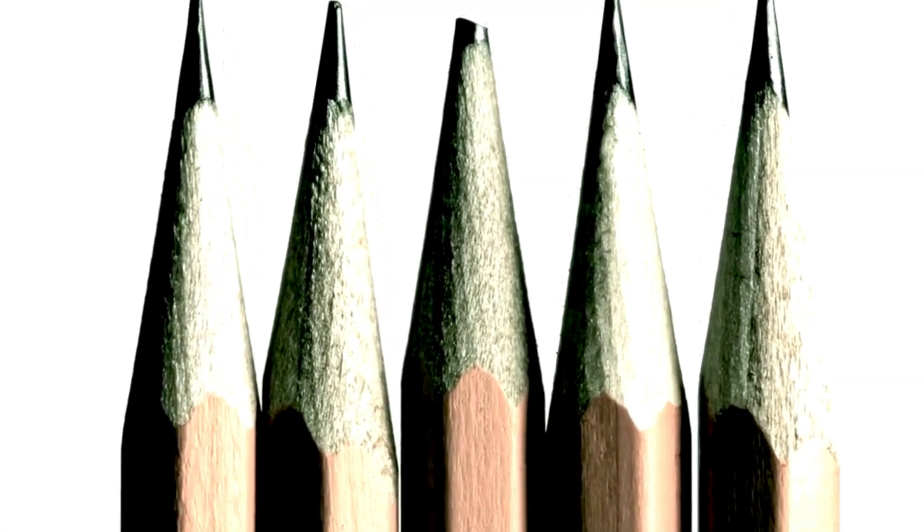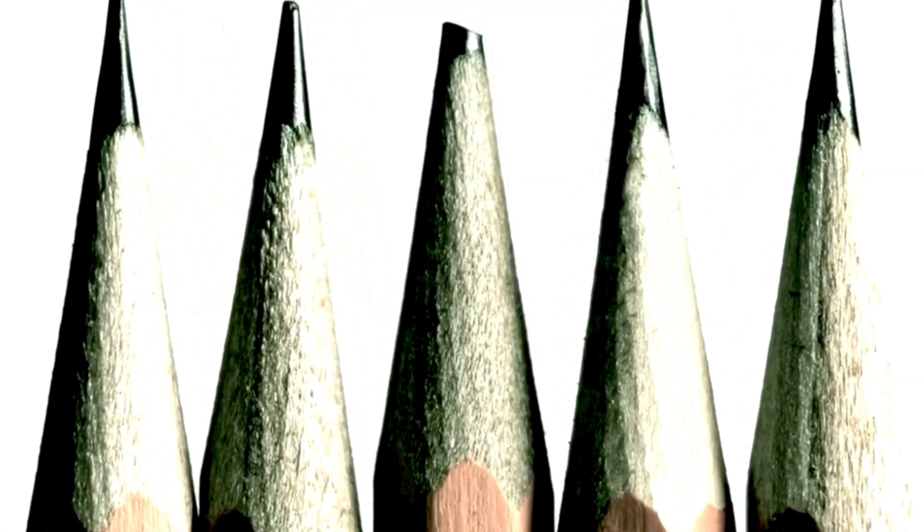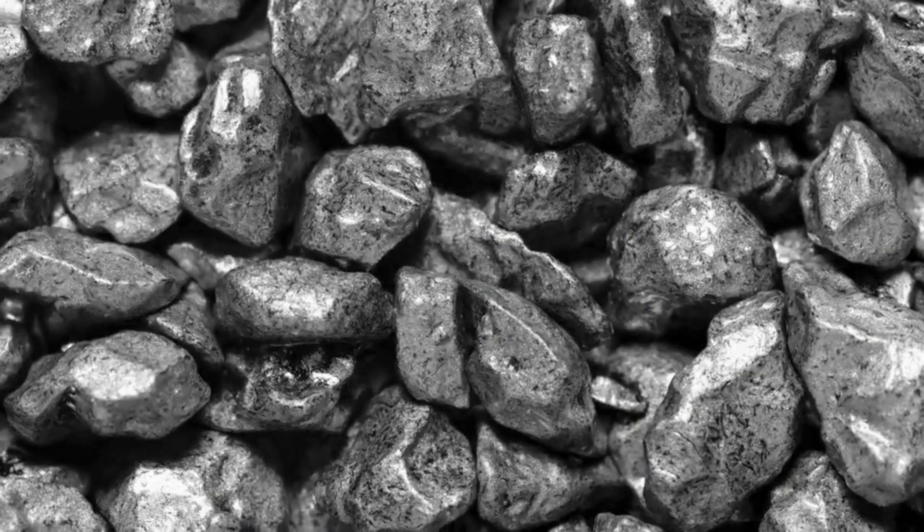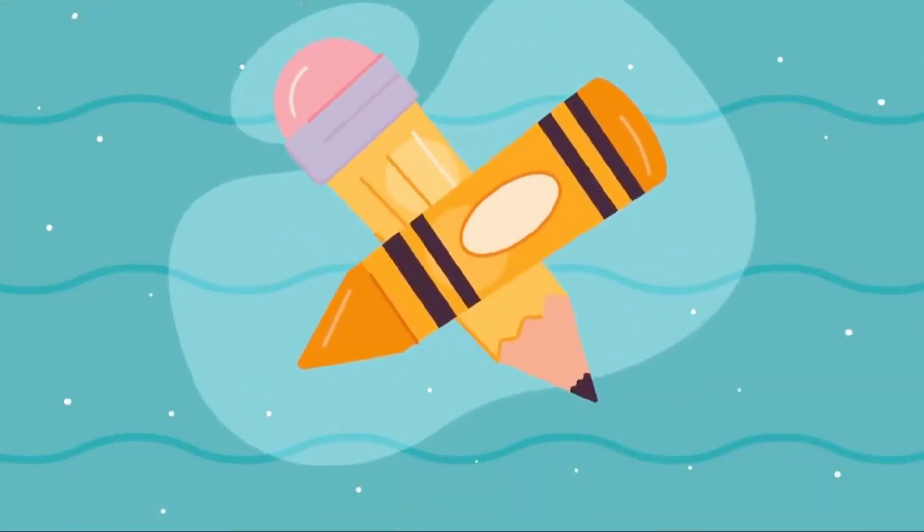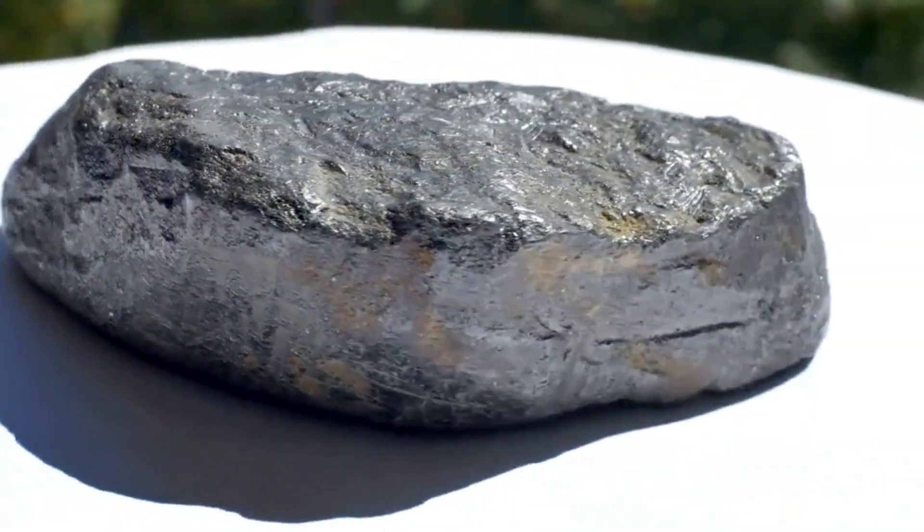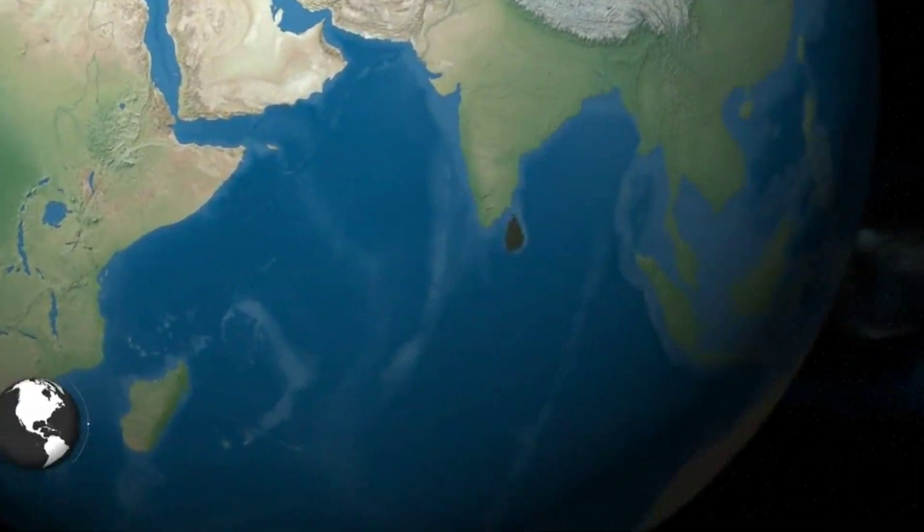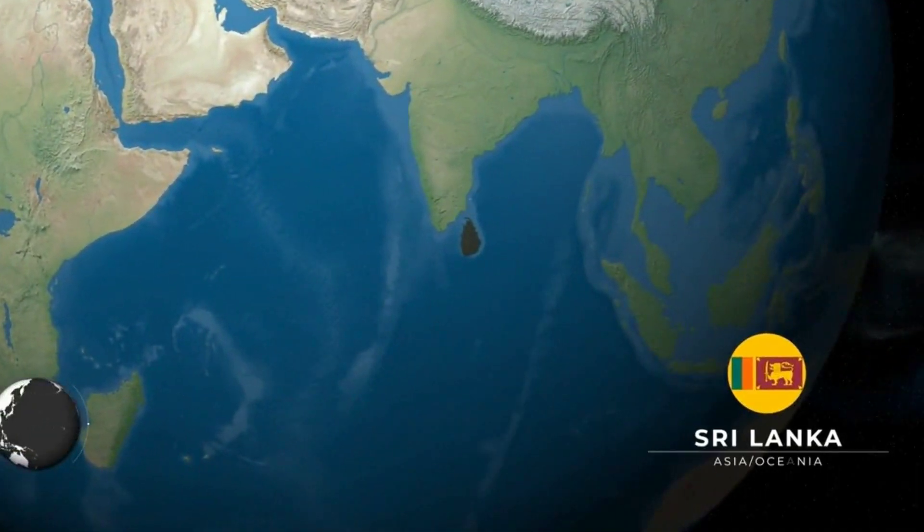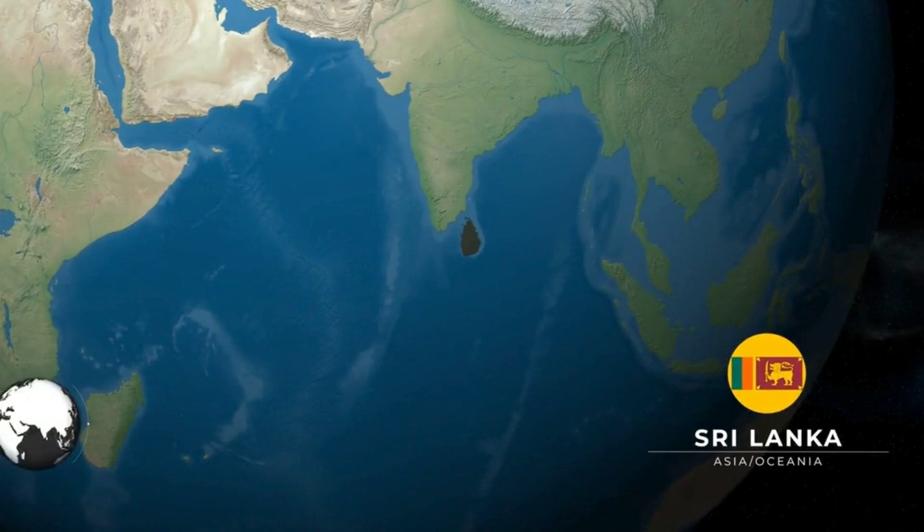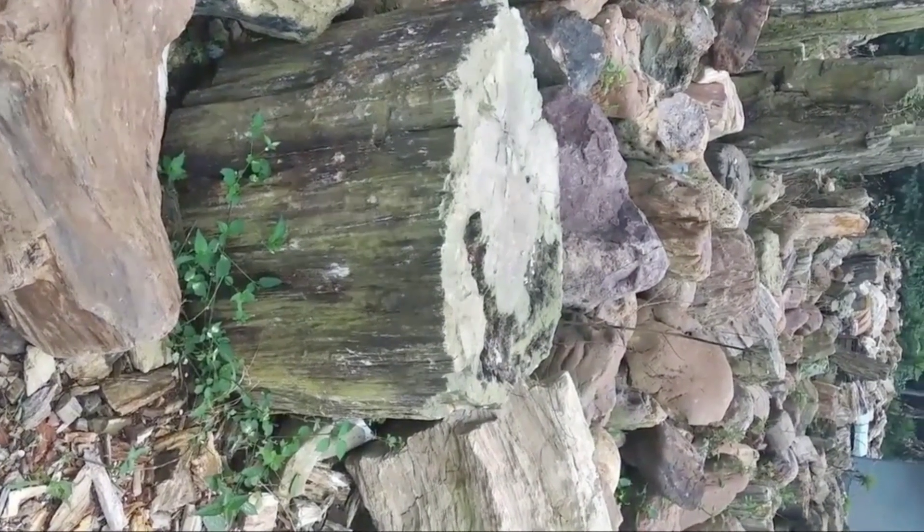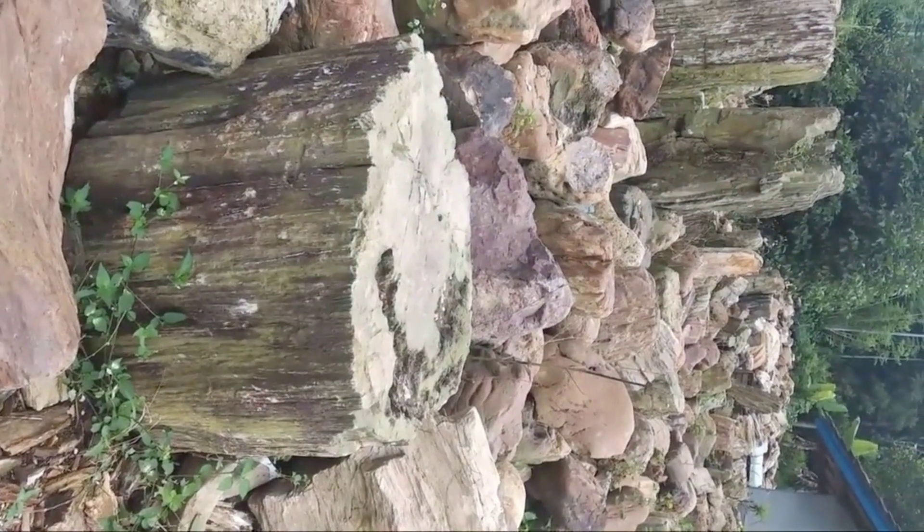The heart of every pencil, the lead, is not actually lead at all, but a blend of graphite and clay. The graphite used in pencils is not your everyday graphite, it's a high-quality version known as vein graphite. This special graphite is primarily sourced from two places on the globe, Sri Lanka and Madagascar. These locations are prized for their natural deposits of this valuable material.